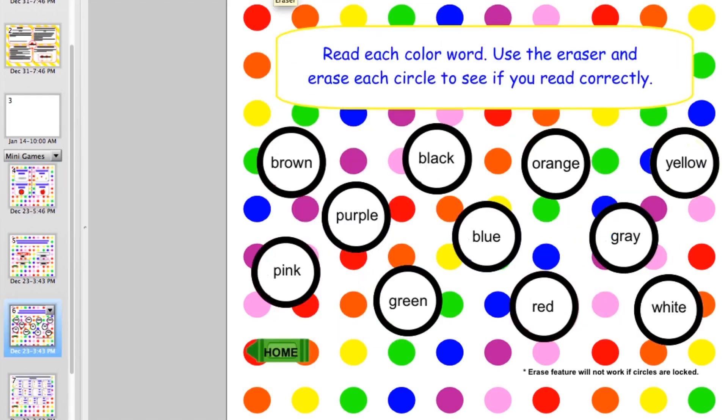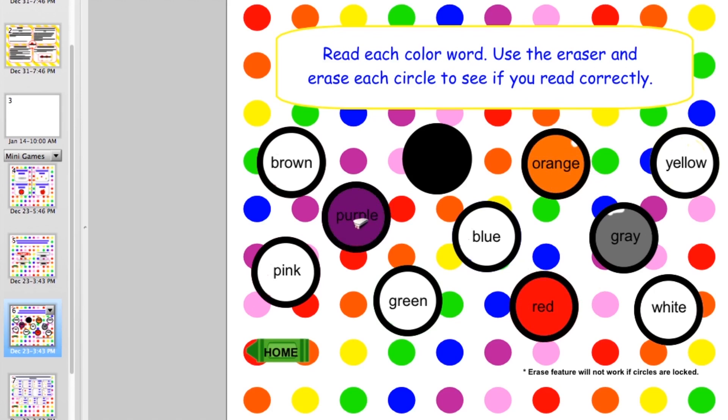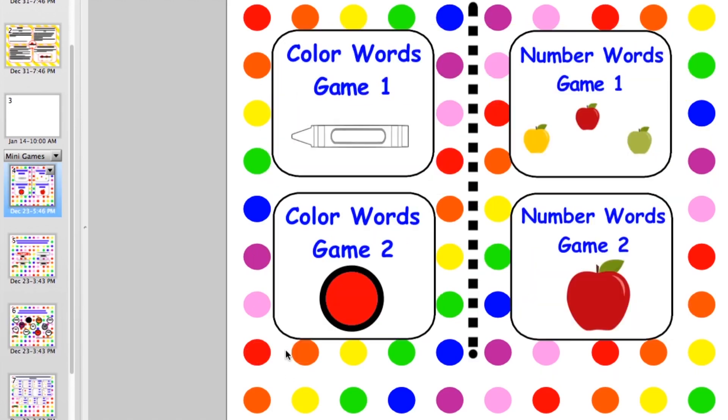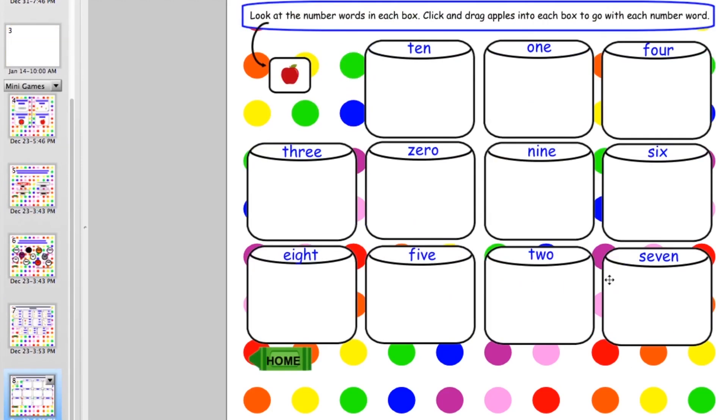In the third game, students will read out the color word before using the eraser feature to erase the color word and see if they are correct. In the last game they will drag the correct amount of apples into the box according to the number word at the top of the box.